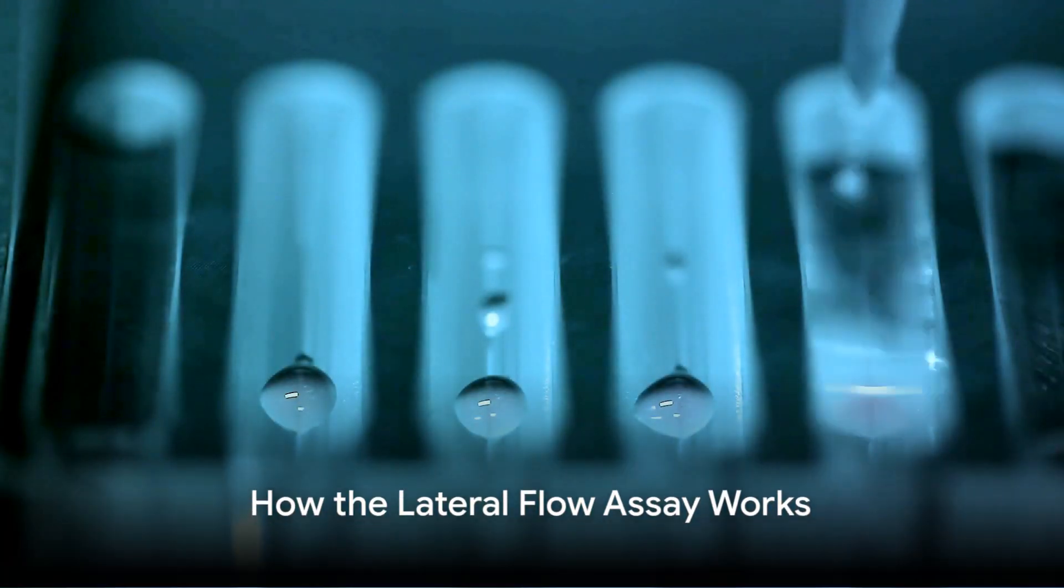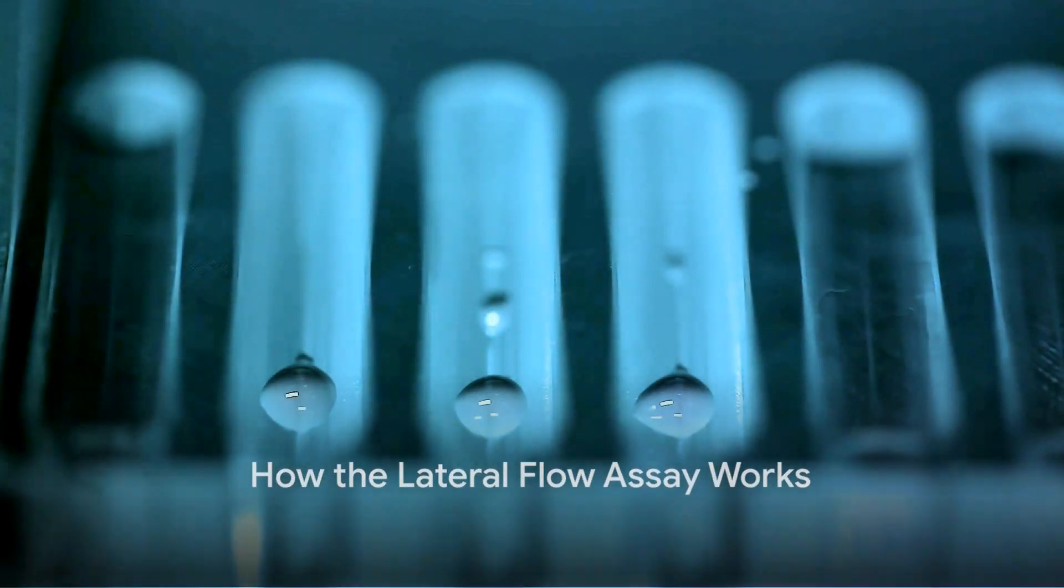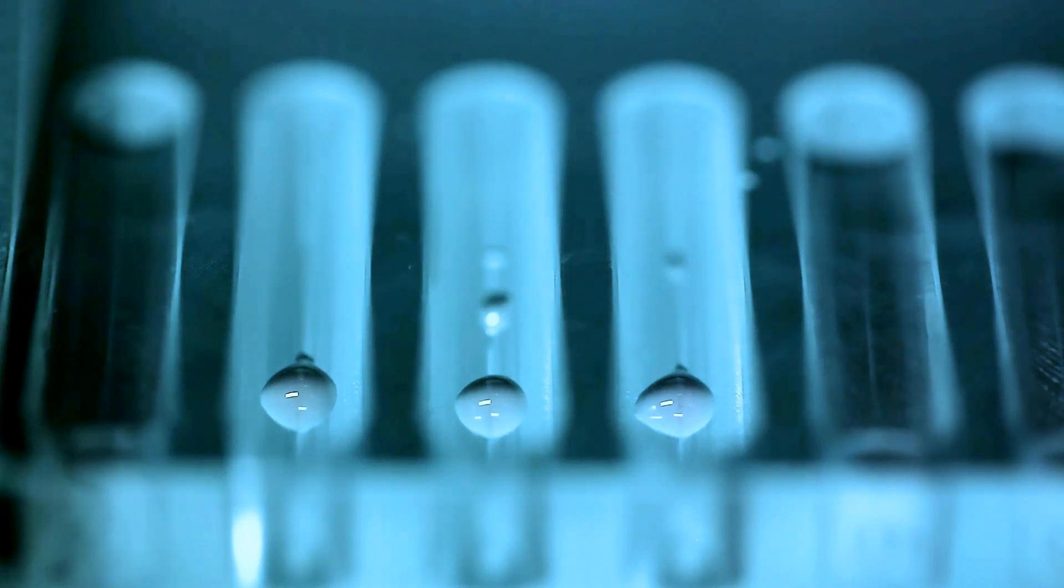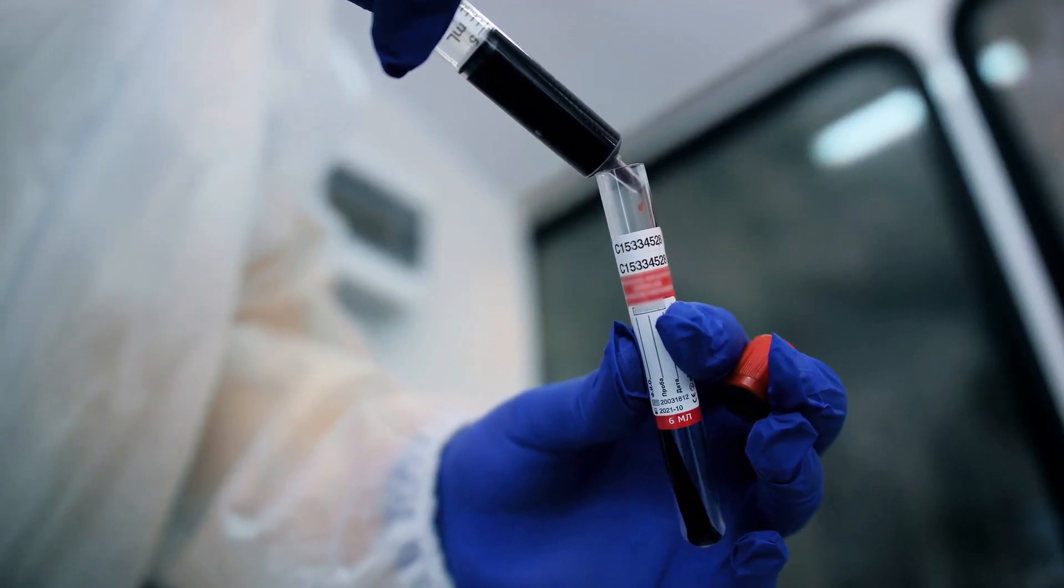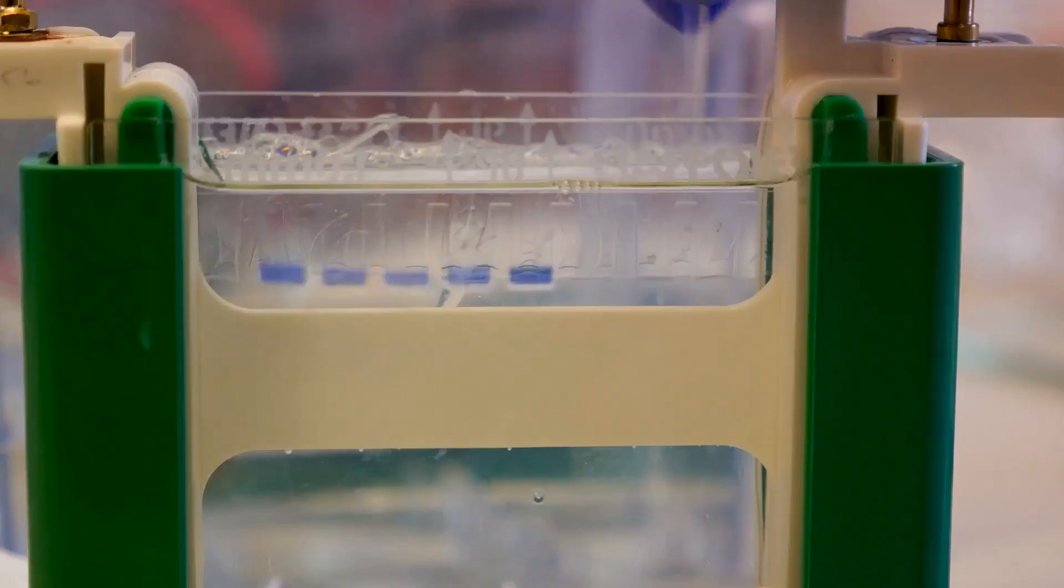Here's how it works. A lateral flow assay, often seen in the form of a simple test strip, uses capillary action to move a fluid sample along a solid substrate, typically a nitrocellulose membrane. This membrane is pretreated with specific antibodies or antigens, depending on the test.